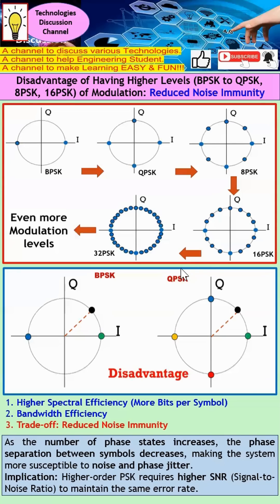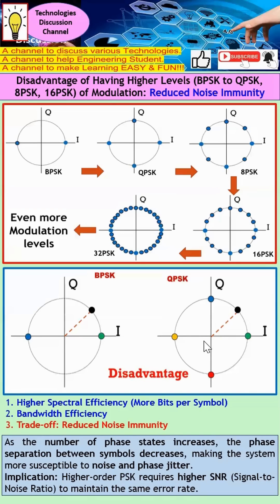However, for QPSK, with the same amount of error, you can see that the black-coloured dot actually sits right in between the blue and the green. At this moment, I'm not confident to conclude whether it's supposed to be green or supposed to be blue. So therefore, you can see that I will have some issue in terms of noise immunity. When the number of phase states actually increases, the phase separation between symbols actually reduces.